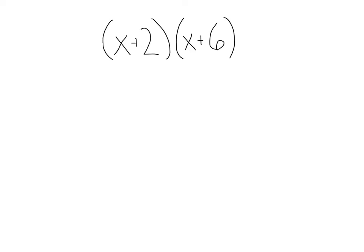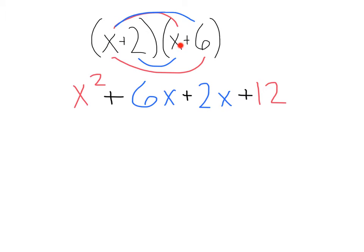Let's do some reverse engineering to discover this factoring technique. Here we've got two factors, x plus 2 times x plus 6, let's distribute this out. Doing that we're going to get x times x, x squared, plus x times 6, 6x, plus 2 times x, 2x, plus 2 times 6, 12.